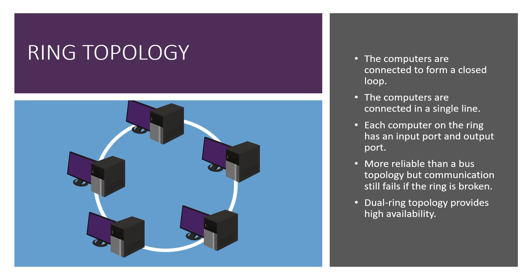When data has to get sent around, it's sent to the next person. They look at it, see if it's for them — if not, they send it to the next person, until it eventually gets to the one it's intended for. This makes the ring more reliable than the bus, because data travels in one direction — either all clockwise or all counterclockwise — so you don't have the collisions you get when all data flows in the same direction.